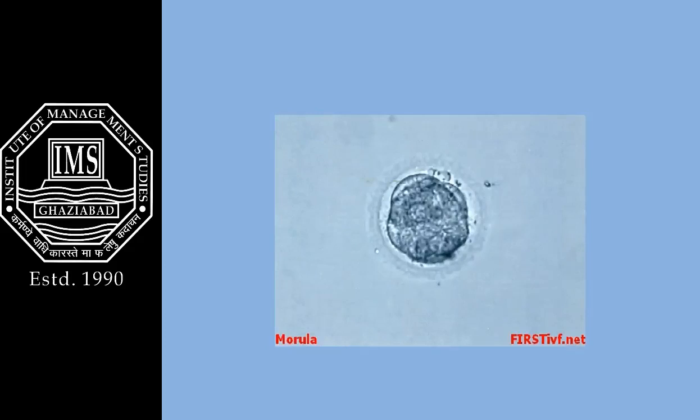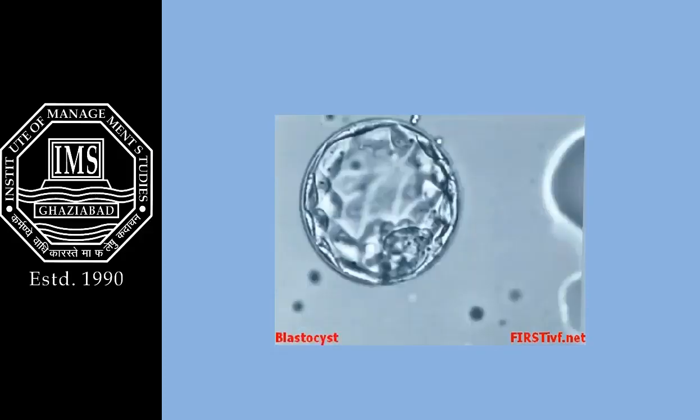On day four, the cells have divided several more times and are indistinct — they are still identical to each other. Day five is a big day: fluid builds up inside the ball of cells, making it look hollow like a soccer ball.